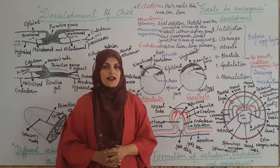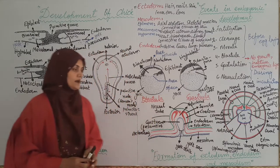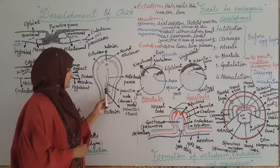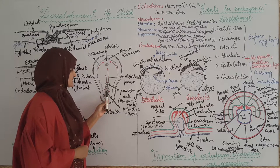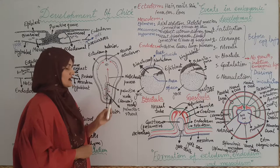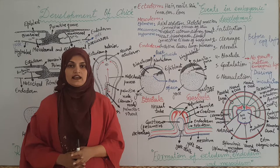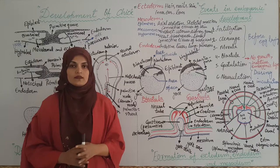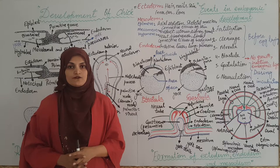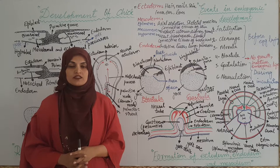When the endoderm is formed, some cells from the epiblast move toward the middle from the primitive streak, then migrate laterally through the primitive streak into the blastocoel, forming mesoderm. The remaining epiblast forms the third germ layer, which is termed ectoderm.